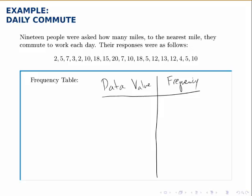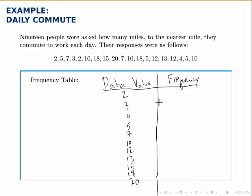Now we'll go through the data set and for each unique data value that we see, we'll list that in the left-hand column. Once we've filled in all these data values, now we just need to count how many times they occur.